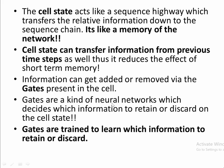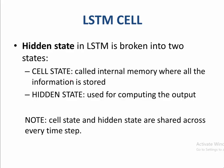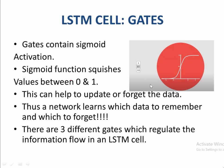In an LSTM cell, the hidden state is broken into two parts: the cell state, which is internal memory where entire information is stored, and the hidden state, which is used to compute the output. They are shared across every time step. LSTM uses gates with a sigmoid activation function, because sigmoid ranges from 0 to 1, helping the network decide which data to update or forget. A network will learn which data to remember and which to forget.